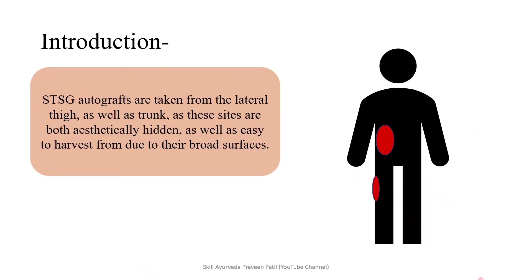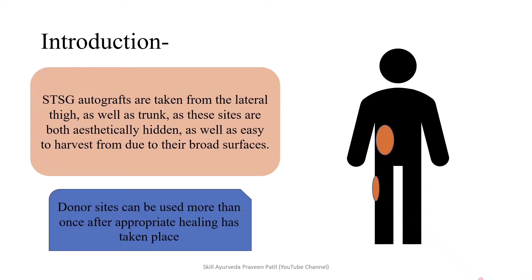Coming to the introduction, STSG — that is split thickness skin graft — is an autograft. In this presentation, autografts are taken from the lateral side of the thigh as well as the trunk, as these sites are both aesthetically hidden by clothing and easy to harvest due to their broad surface area. The donor site can be used more than once after appropriate healing has taken place.